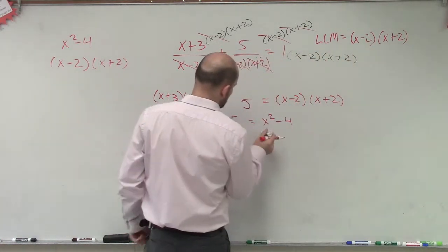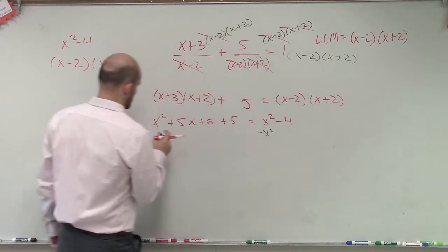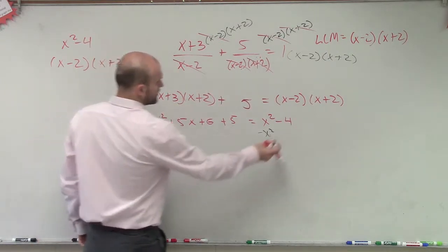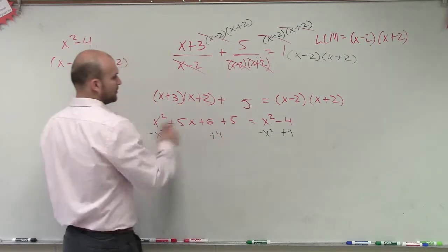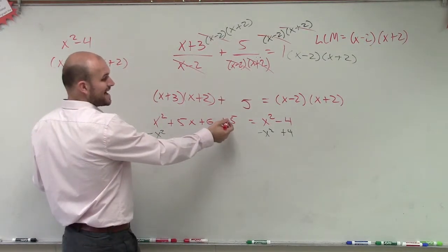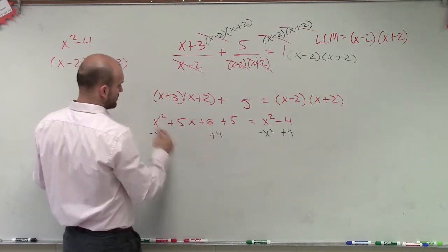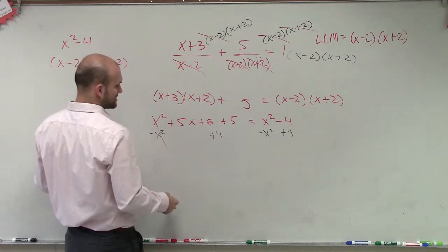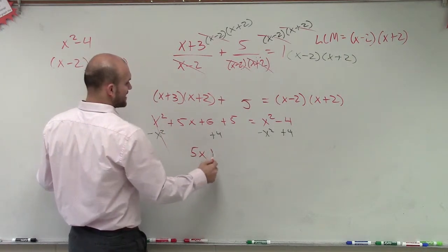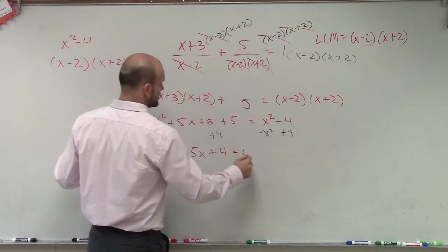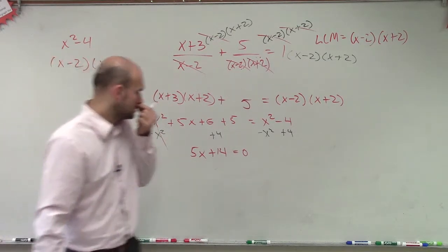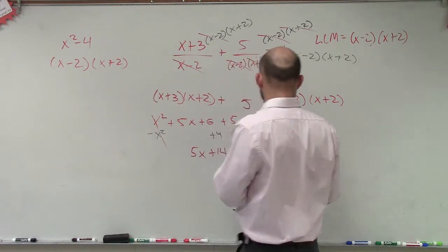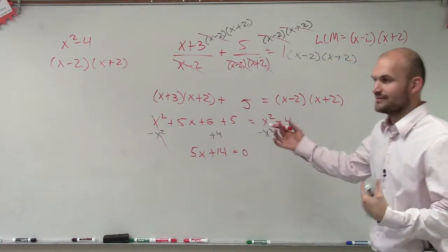So let's subtract an x squared on both sides. And let's add a 4. Well, what we have is 6 plus 5 is 10, plus 4 is 14. This actually subtracts to 0. So I have 5x plus 14 equals 0. Something wrong? So that's 11, right? Thank you.